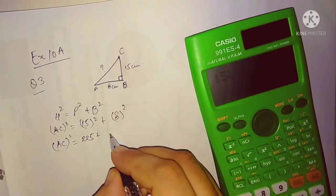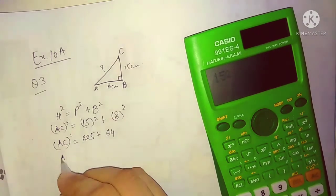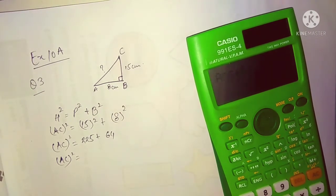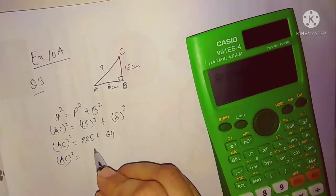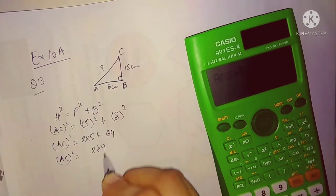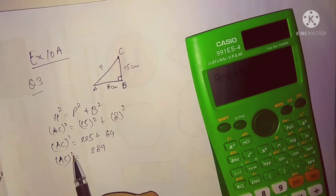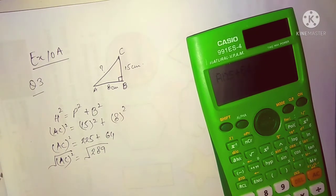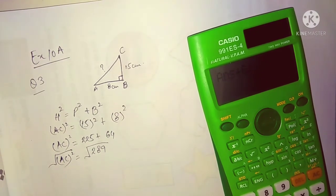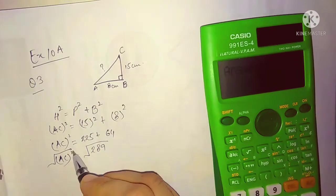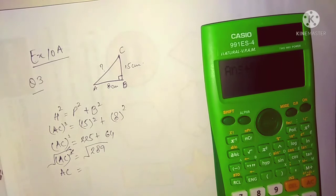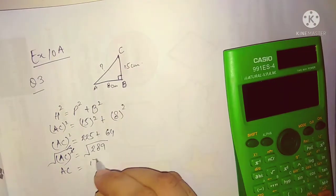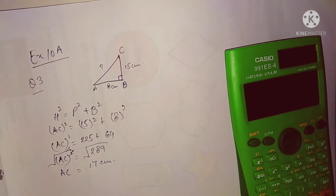8 squared is 64. Now add 64 and 225, which gives 289. To find the value of AC, take the square root on both sides — the square root and square cancel each other. The square root of 289 is 17. So your answer is 17 centimeters.